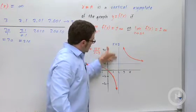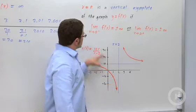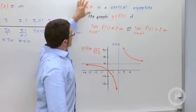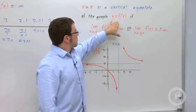These limits signal the presence of a vertical asymptote. And that leads us to this definition. A vertical line x equals a is a vertical asymptote of the graph of a function y equals f of x if one of these four things is true.